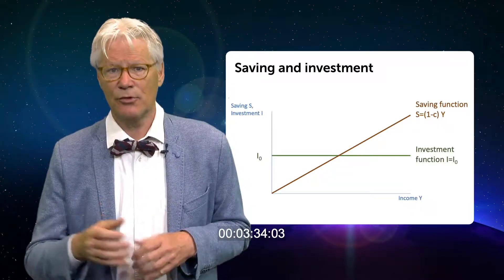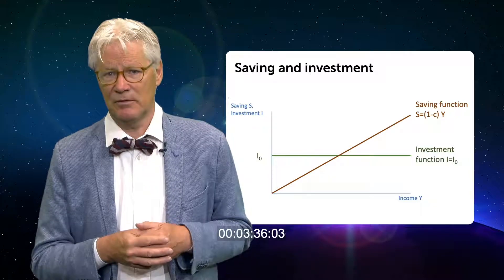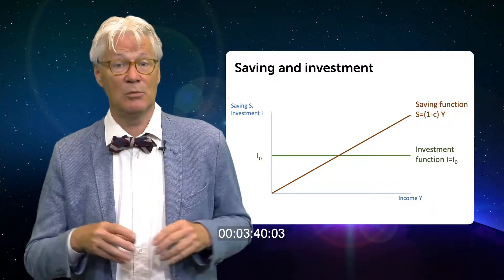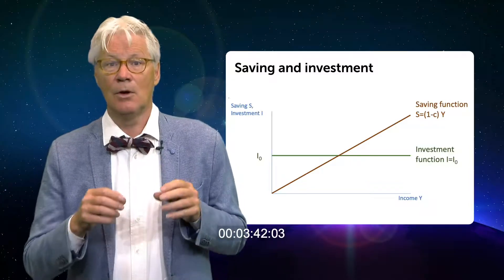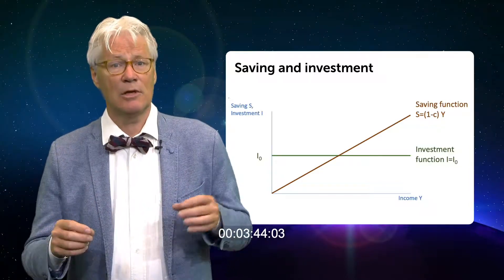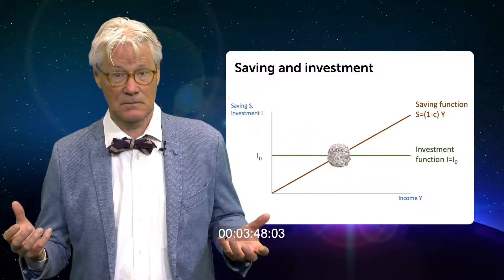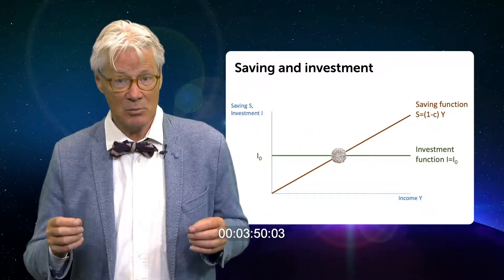The green horizontal function represents investment. Investment is not influenced by income in this simple model. The equilibrium requires equality of investment and saving. But is this a stable equilibrium?